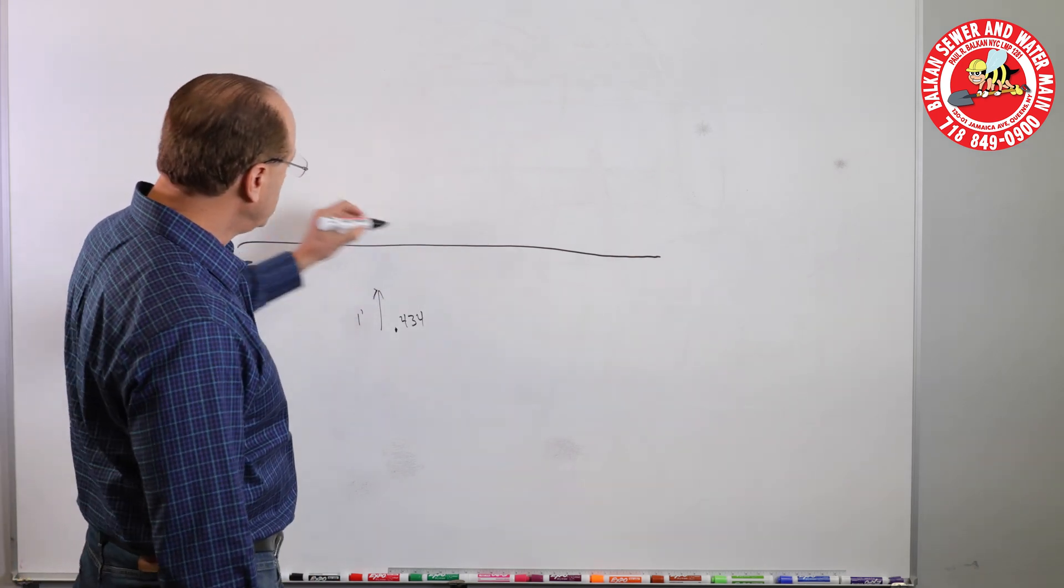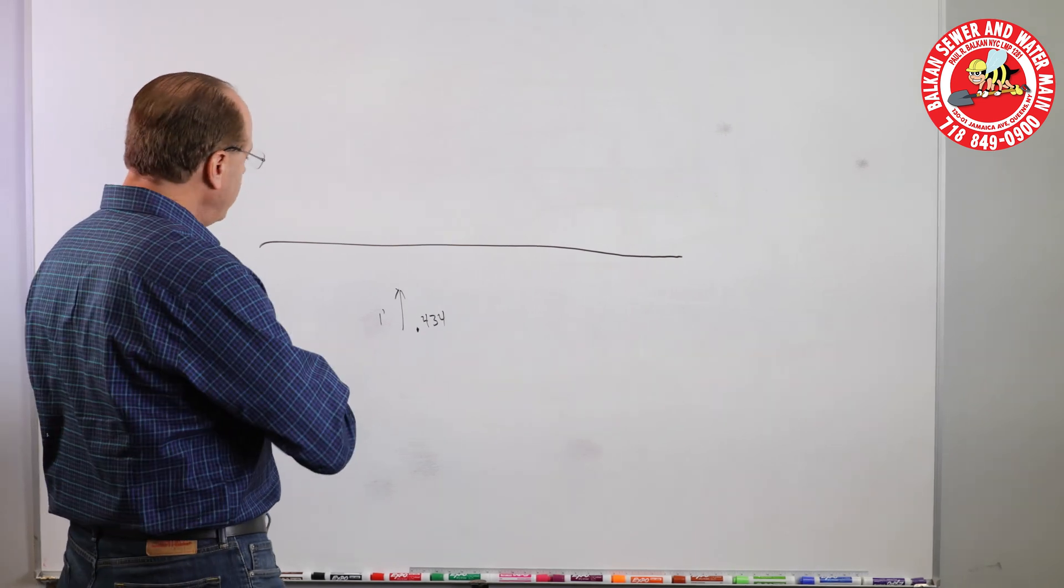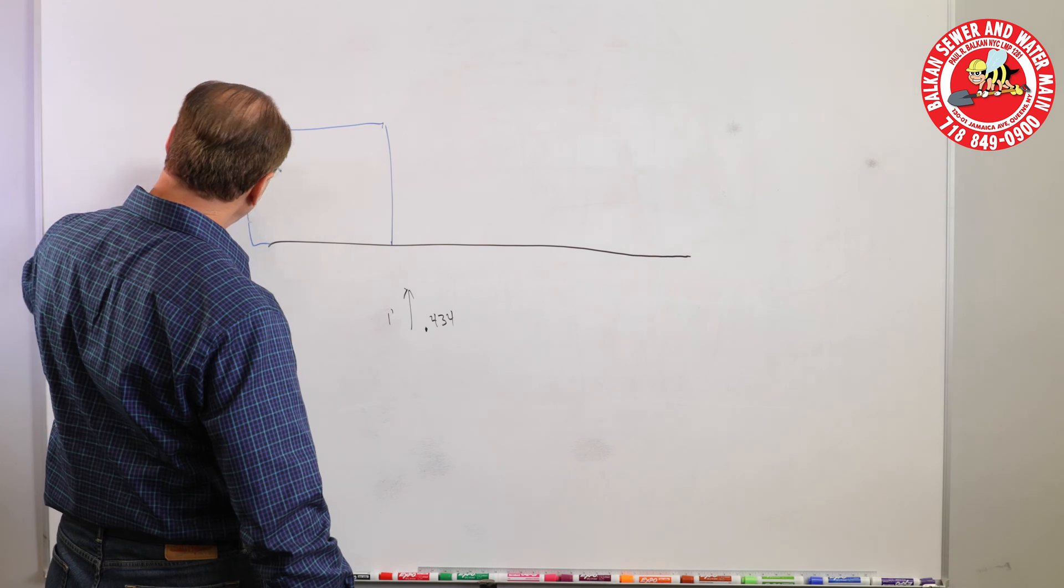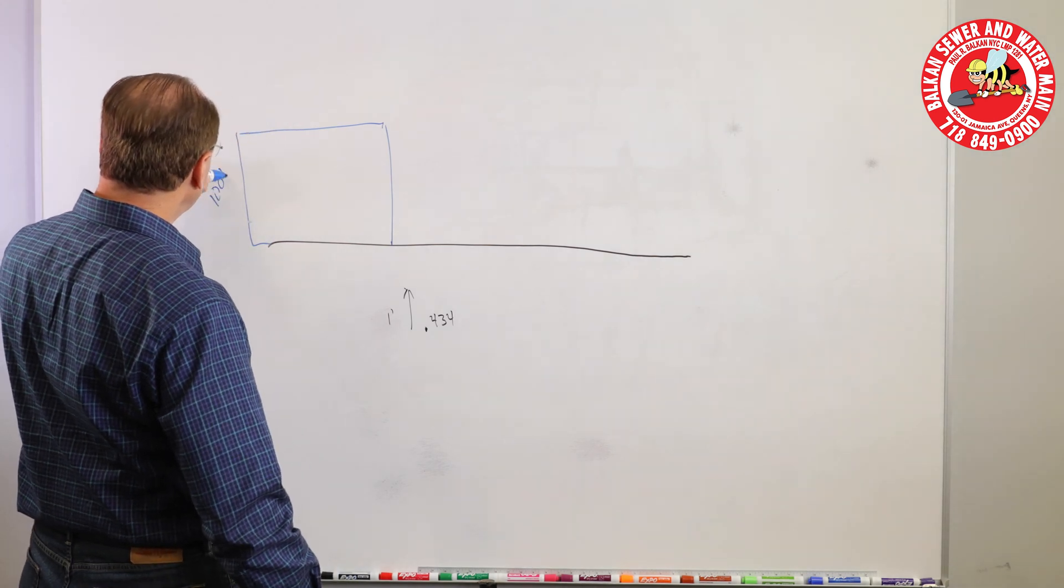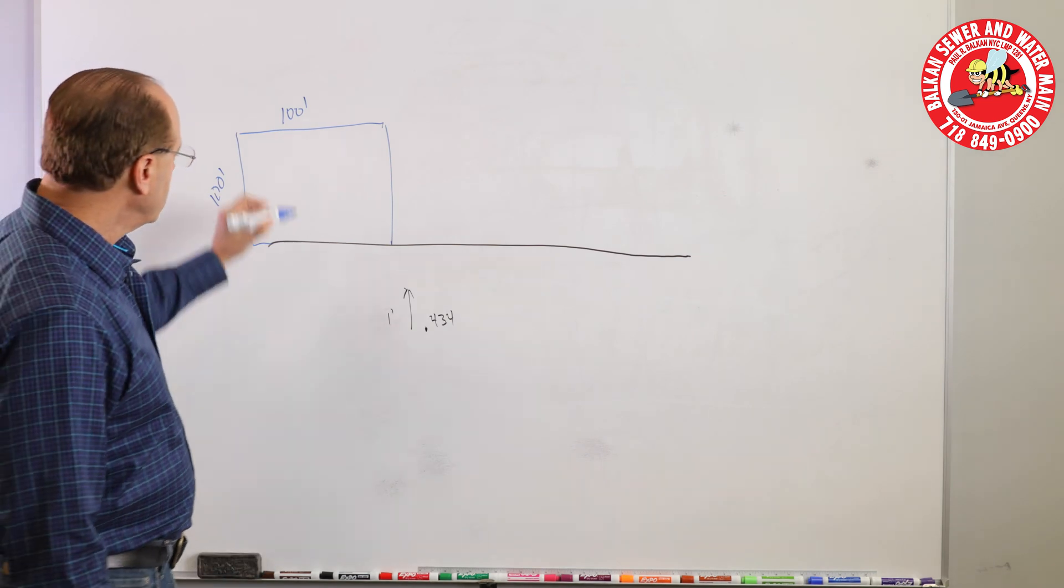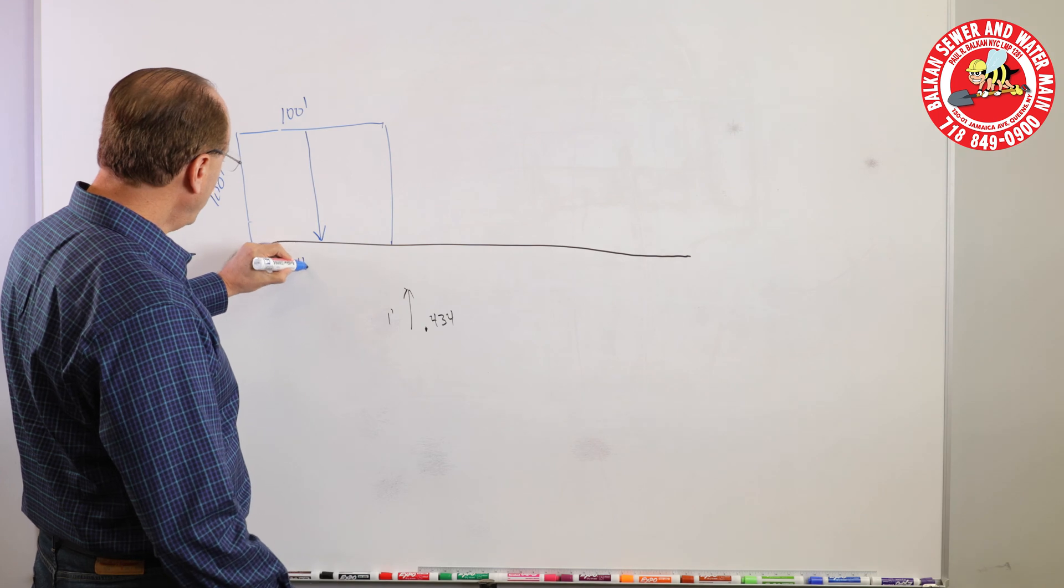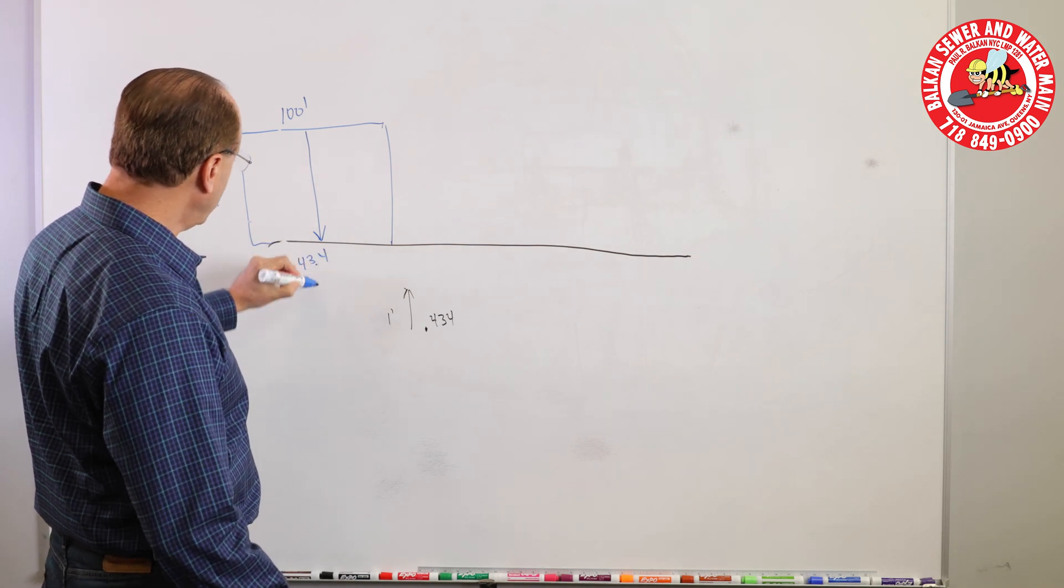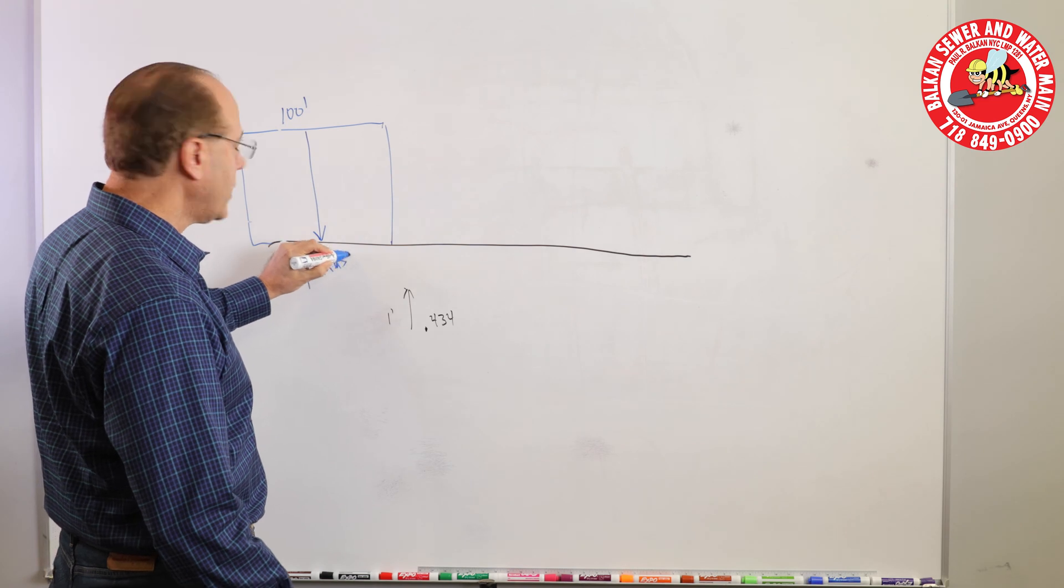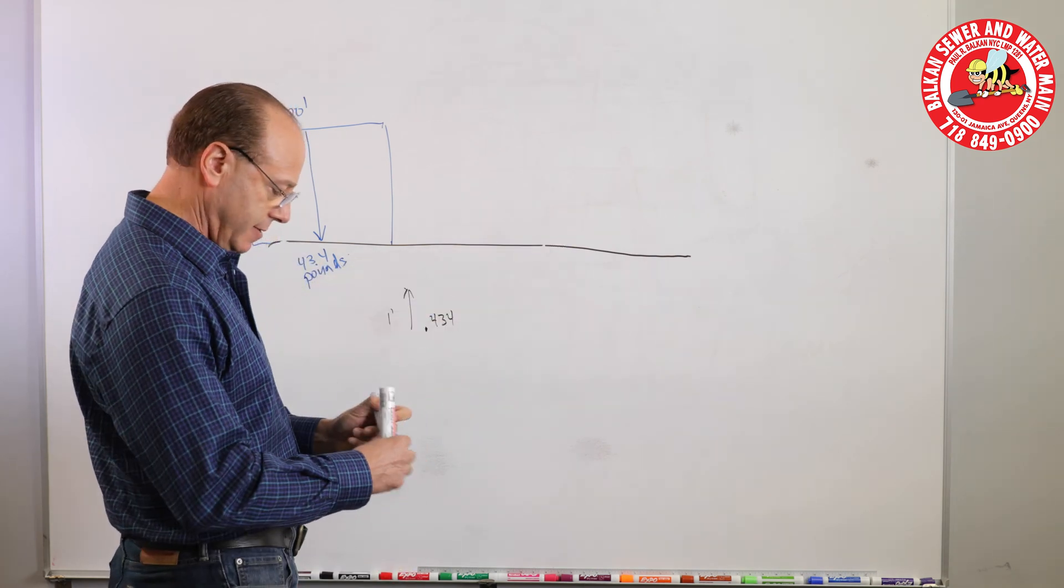So in other words if this is ground level and you have let's say you have a water tank that's a hundred feet high, the PSI at ground level would be 43.4 pounds. That's what your PSI would be if you were at ground level if your house was at ground level.